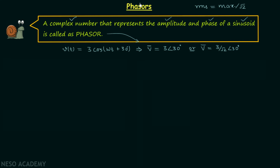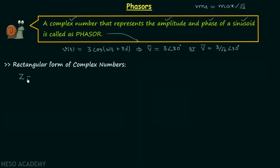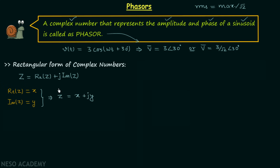Before diving into more details of phasors, we will quickly revise the basics of complex numbers, because a phasor is nothing but a complex number. We start with the rectangular form: a complex number Z has a real part x and an imaginary part y, so Z equals x plus jy, where j equals the square root of minus 1.